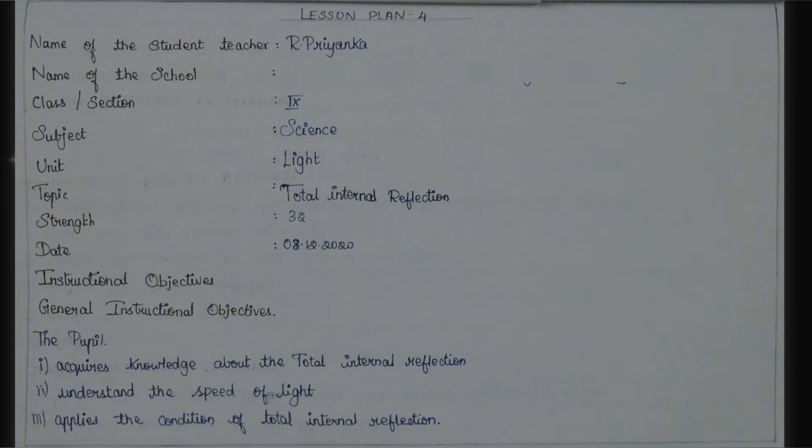Next, date is mentioned. And then general instructional objectives: the pupil acquires knowledge about total internal reflection and understands the speed of light.